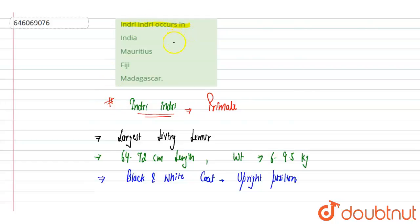If you'll see in the question, Indri occurs in - these are endemic to the island Madagascar. Endemic means they are only found in Madagascar. These are not found in any other country or island. These are only endemic to Madagascar.